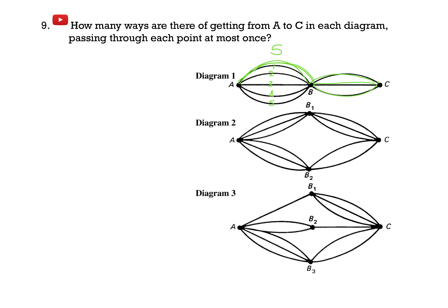And to go from B to C, there are 1, 2, 3 ways. So to find the total number of paths, I just need to multiply those two numbers together. So 5 times 3 gives us 15. There are 15 ways to get from A to C in the first diagram.